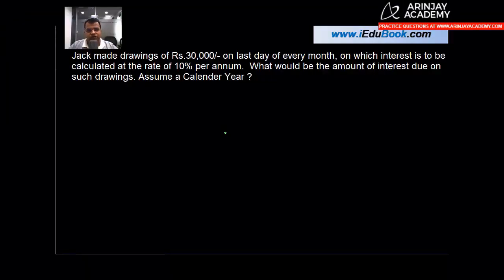Let us now understand how do you calculate interest on drawings of fixed amount which are made on the last day of every month, and there's a fixed rate of interest which you are given. So let's read the question first. Jack made drawings of rupees 30,000 on the last day of every month, on which interest is to be calculated at the rate of 10% per annum.